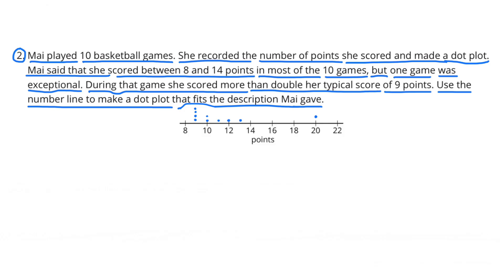Combined there's a total of 10 dots to represent the 10 games that she played. 9 of those dots fall between 8 and 14 points. The 10th dot falls above the 20 to represent the 20 points that she scored in one game.